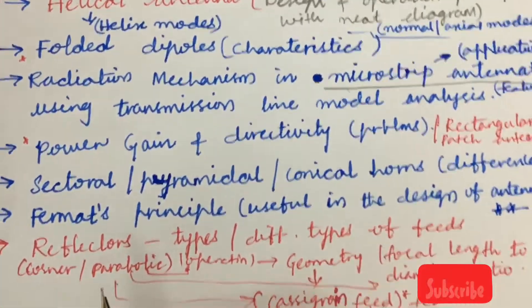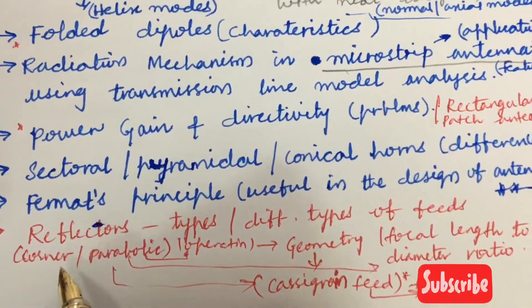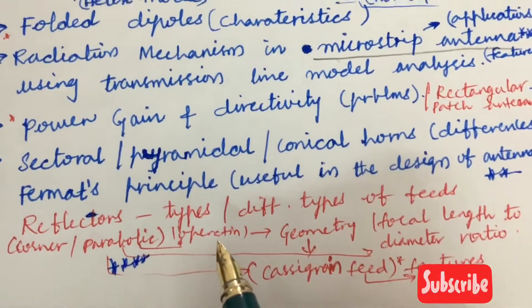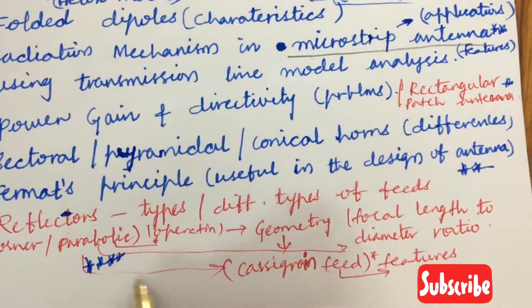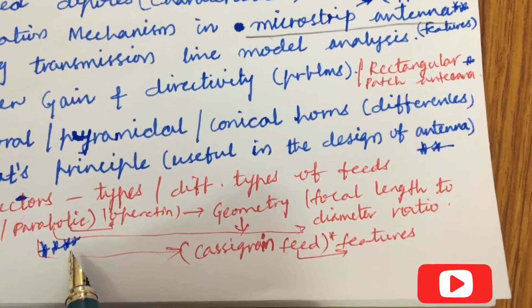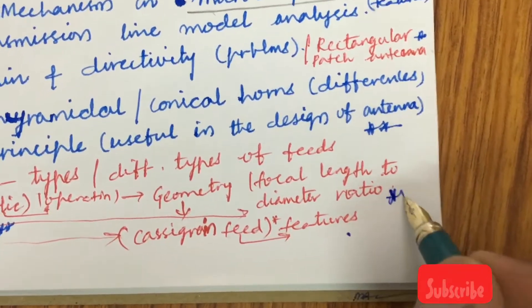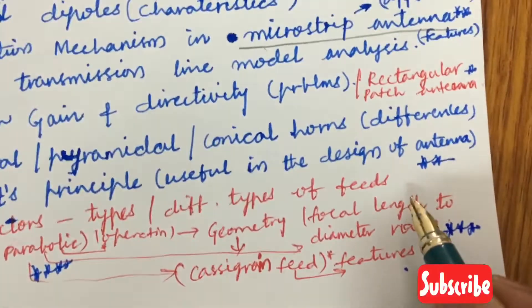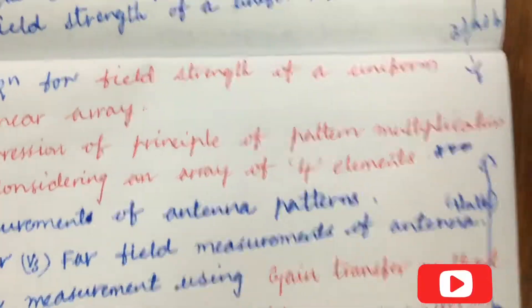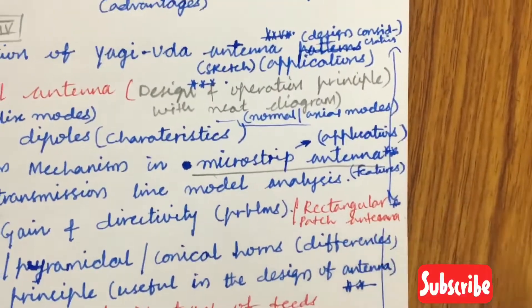All the questions from Units 3 and 4 are very important gunshot questions. Under reflectors, the corner reflector and parabolic reflector are asked most often — expect this as a gunshot question covering operation, classic grain field geometry, derivation for parabolic reflectors, focal length to diameter ratio, and different types of feed arrangements. We can expect one-and-a-half questions from Unit 3 content and one-and-a-half questions from Unit 4 content.